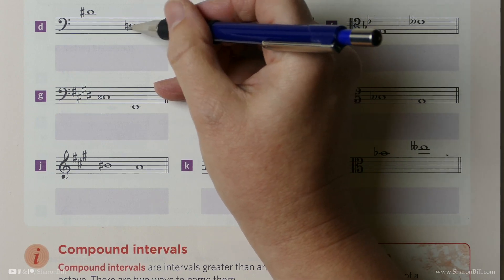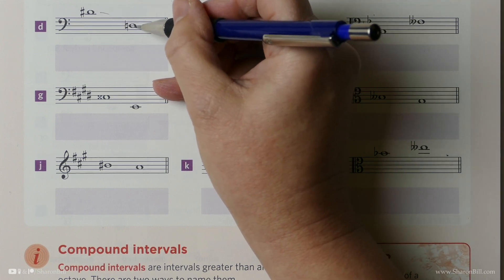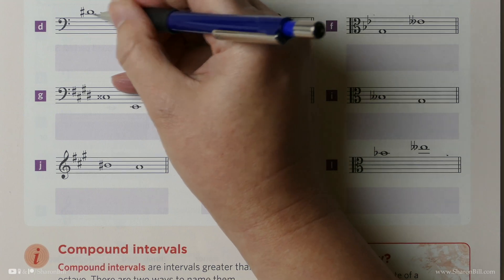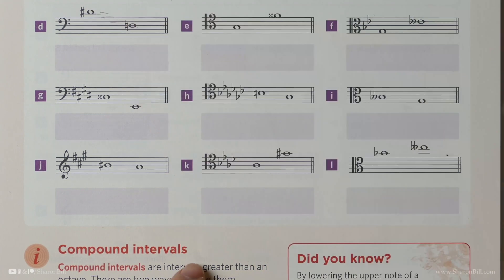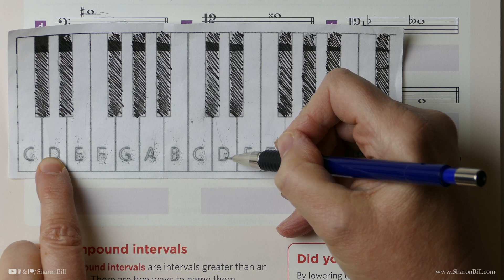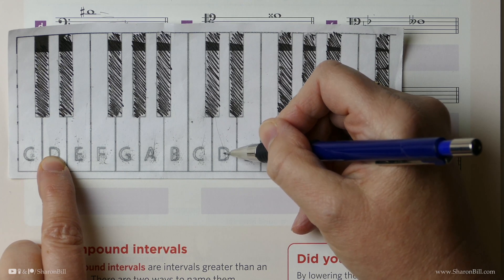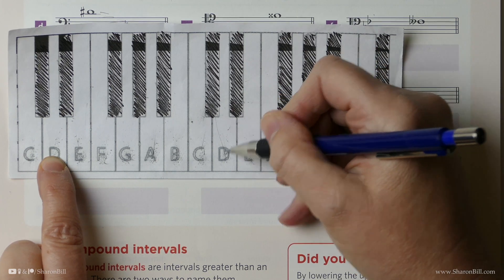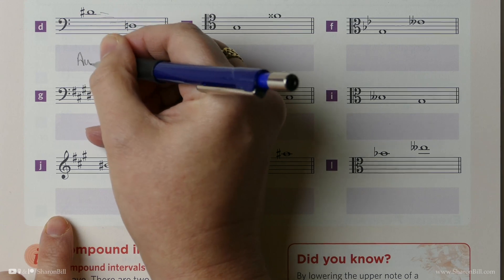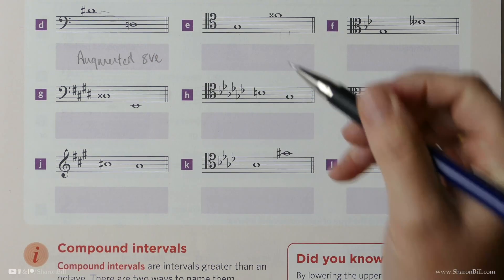Remember, we have the lowest note, we count up regardless of which way the interval goes. So here we've got D natural to D sharp — we're going from D to D, and we can see that's an octave: 1, 2, 3, 4, 5, 6, 7, 8. Octaves are perfect, so we have D to D — that's a perfect octave — but the upper D has been raised by a sharp, and so we've made the interval bigger. We've augmented it from a perfect to an augmented octave.